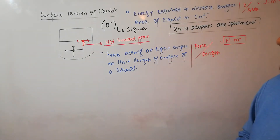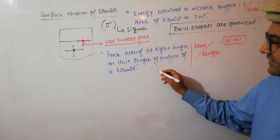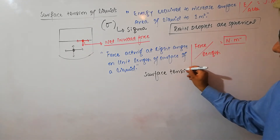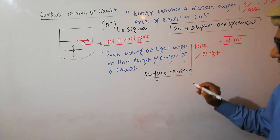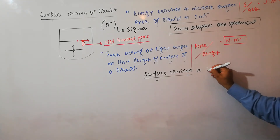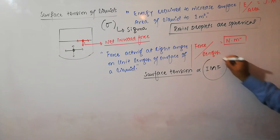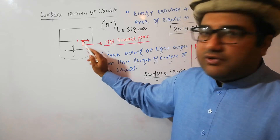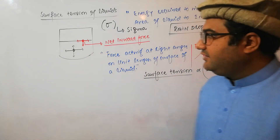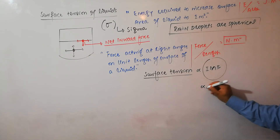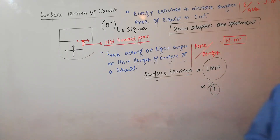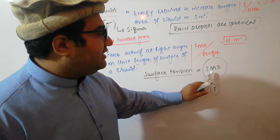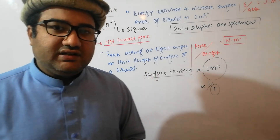Now, what are the factors that affect the surface tension of a liquid? Surface tension basically depends on two factors. First, surface tension is directly proportional to intermolecular forces — the stronger the intermolecular forces, the greater the inward pull and the higher the surface tension. Second, surface tension is inversely proportional to temperature. When you increase the temperature of the liquid, it weakens the intermolecular forces, and when intermolecular forces are weaker, the surface tension decreases.